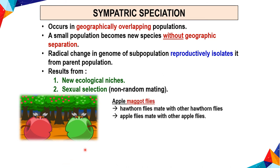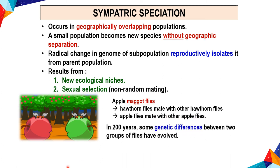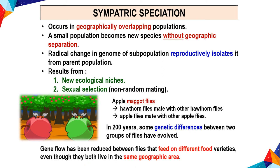For example, apple maggot flies. Hawthorn flies mate with other hawthorn flies, and apple flies mate with other apple flies. In 200 years, some genetic differences between the two groups of flies have evolved. Gene flow has been reduced between flies that feed on different food varieties, even though they both live in the same geographic area.